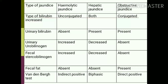A comparison table summarizes all three varieties: In hemolytic jaundice, unconjugated bilirubin is increased; in hepatic jaundice, both conjugated and unconjugated are increased; in obstructive jaundice, conjugated bilirubin is increased. Urine bilirubin is absent in hemolytic jaundice, but present in hepatic and obstructive. Urinary urobilinogen is increased in hemolytic, decreased in hepatic, and absent in obstructive. Fecal stercobilinogen is increased in hemolytic, decreased in hepatic, and absent in obstructive. Fecal fat is normal in hemolytic and hepatic but increased in obstructive. Van den Berg test: indirect positive in hemolytic, biphasic in hepatic, and direct positive in obstructive.